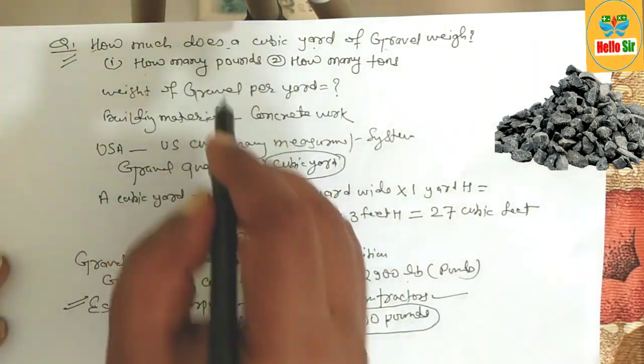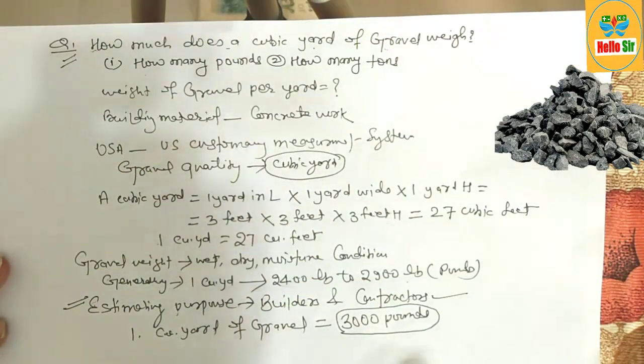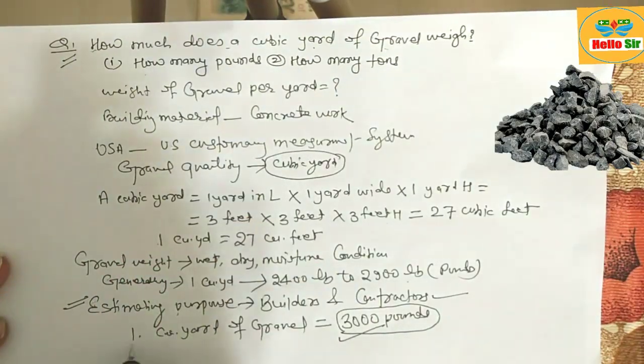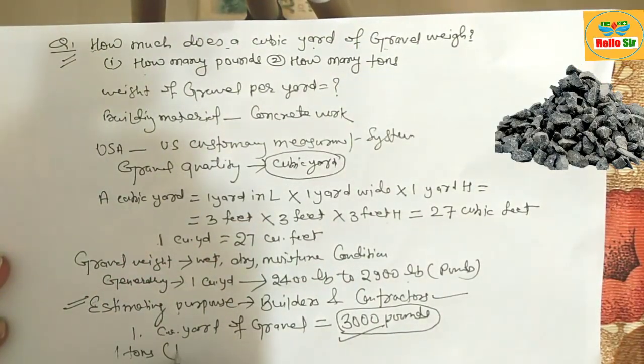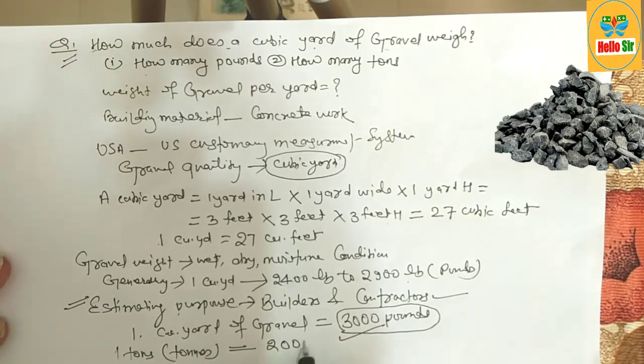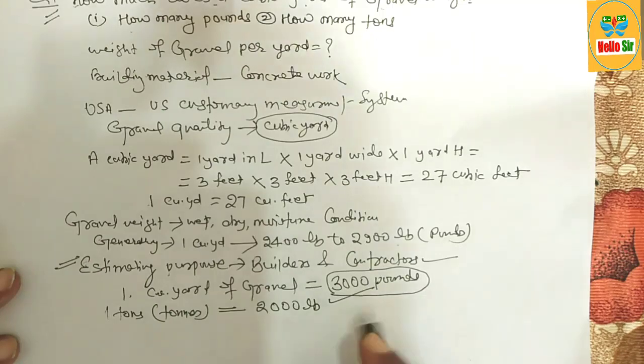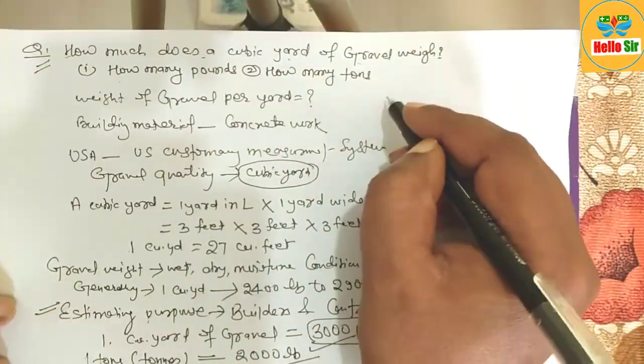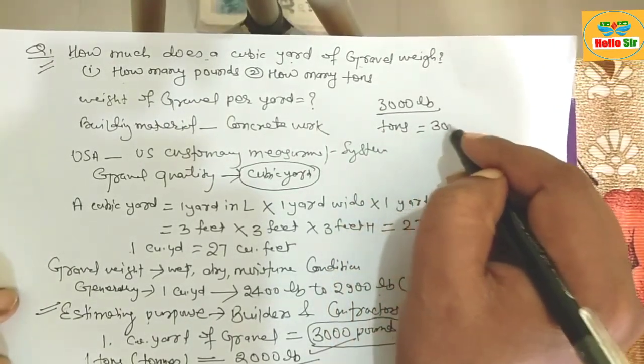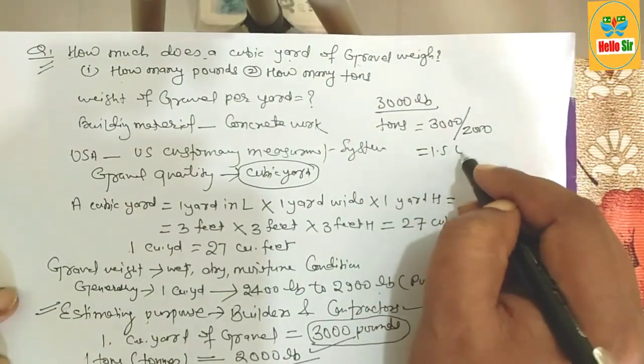How many tons in a cubic yard of gravel? One ton of gravel equals 2,000 pounds. If you have 3,000 pounds, tons of gravel equals 3,000 divided by 2,000, which equals 1.5 US tons.